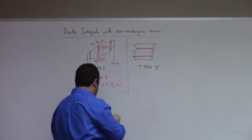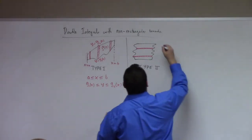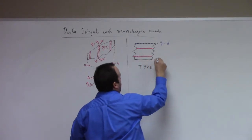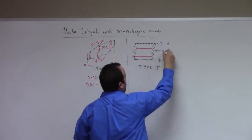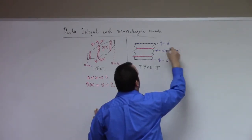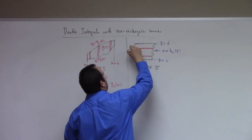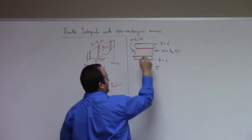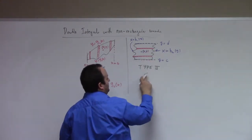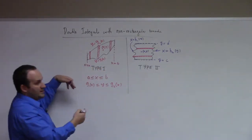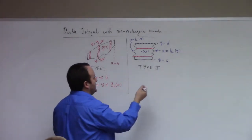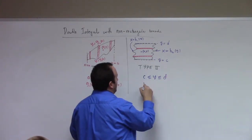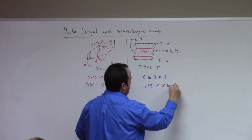And on a type 2 region, I have — let's see here — maybe this is y equals d, and here is y equals c. This one might be x = h2(y), whereas the left would be x = h1(y). And you see for type 2, I have the set of inequalities for a typical point x, y in this region. For it to be type 1 or type 2, it has to satisfy these inequalities for every single point in the region. I have c ≤ y ≤ d, and h1(y) ≤ x ≤ h2(y).